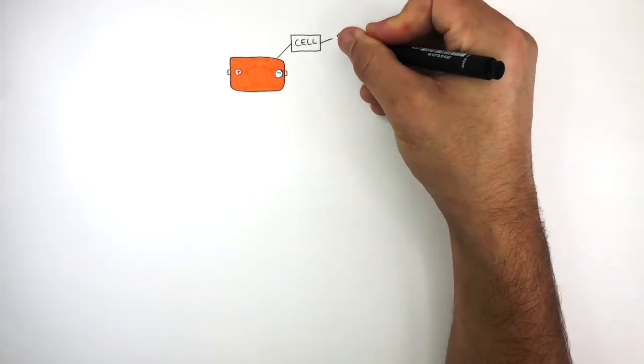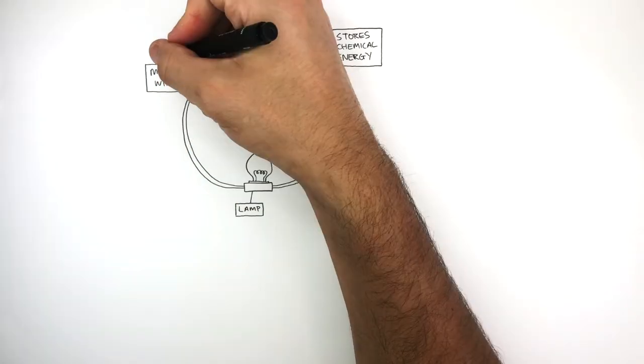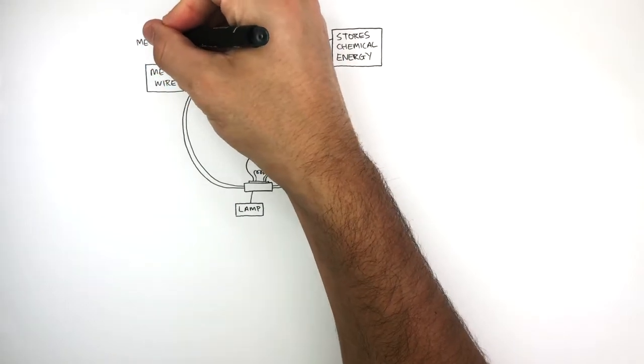Here's a cell which stores chemical energy. The positive terminal is on the left and the negative terminal is on the right. This is a lamp which is connected to the cell by a metal wire. We know this metal wire has metallic bonding.